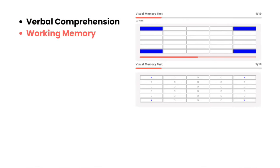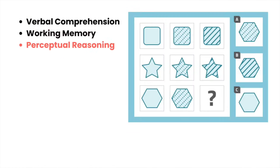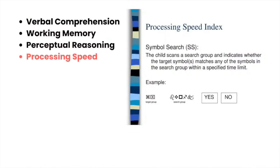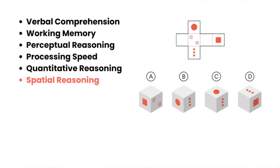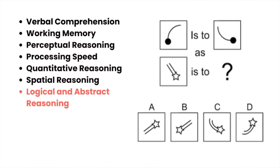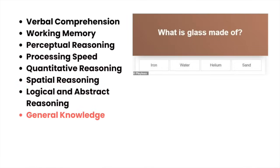With these tests there are eight broad categories for measuring cognitive ability: verbal comprehension, working memory, perceptual reasoning, processing speed, quantitative reasoning, spatial reasoning, logical abstract reasoning, and general knowledge.